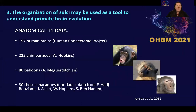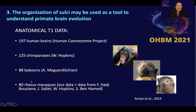The third reason is the goal of today's talk: to show that the organization of sulci may be used as a tool to understand primate brain evolution. To assess this, we analyzed anatomical T1 MRI data of 197 human brains from the Human Connectome Project, 225 chimpanzee brains from a collaboration with Bill Hopkins in the US, 88 baboon brains thanks to a collaboration with Adria Megerdici in France, and 80 rhesus macaques from our lab and collaborators.